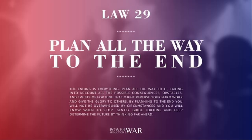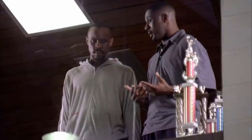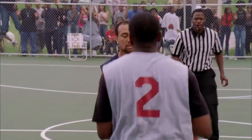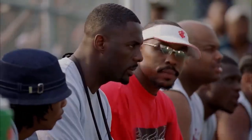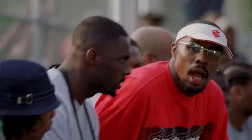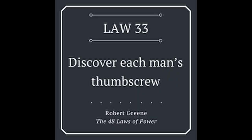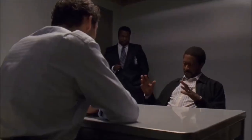Law number 29: Play All the Way to the End. Stringer Bell meticulously plans his moves, whether in the drug trade or his attempts to go legitimate. His strategic thinking and foresight are evident in his efforts to invest in real estate and establish legitimate business ventures.